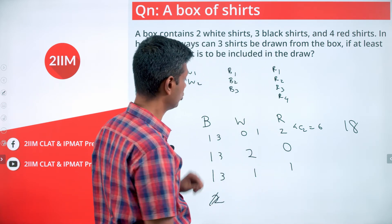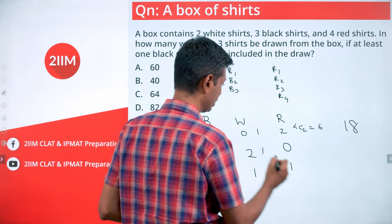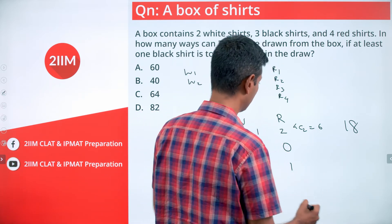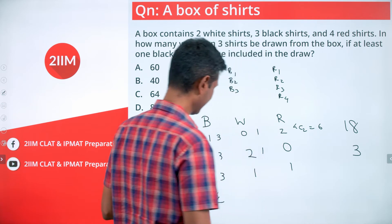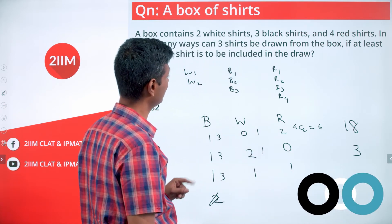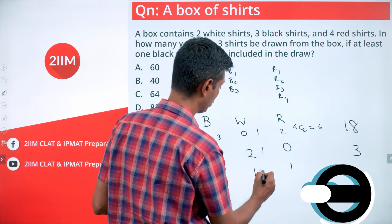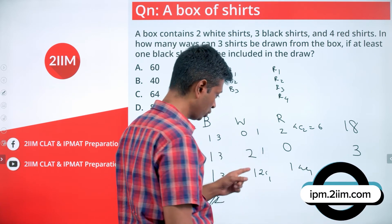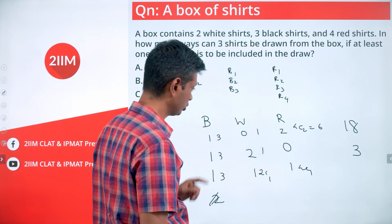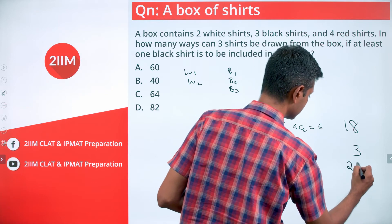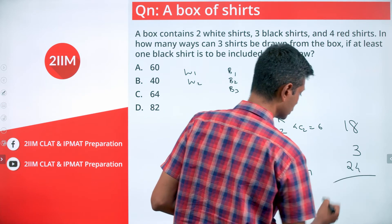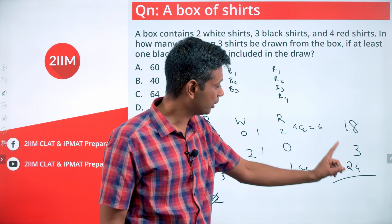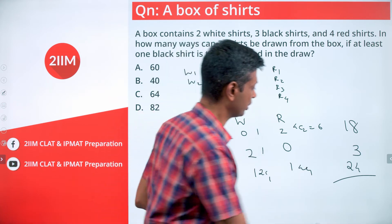Next sub-case: one black shirt, two white, zero red. Out of two white shirts we select both — only one way. So 3 × 1 = 3 ways. Then one black, one white, one red: 3C1 × 2C1 × 4C1 = 3 × 2 × 4 = 24 ways. For one black shirt total: 18 + 3 + 24 = 45 ways.